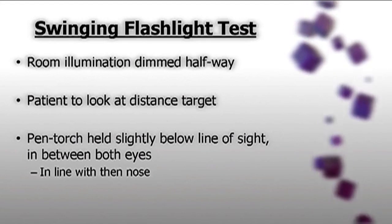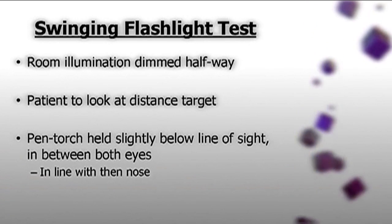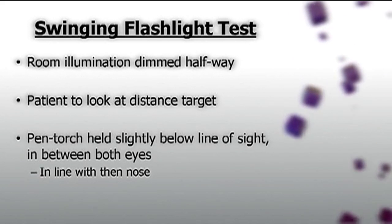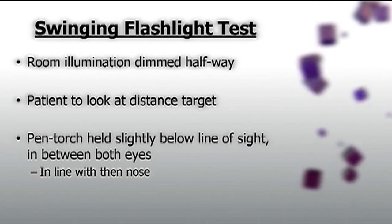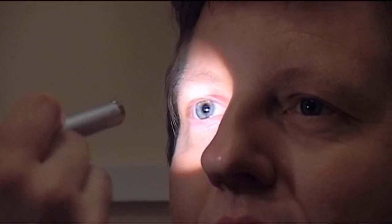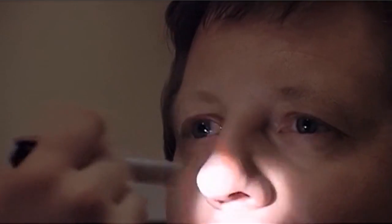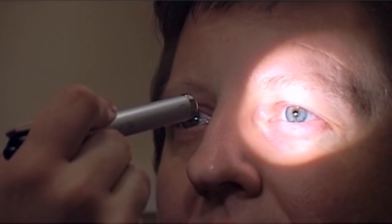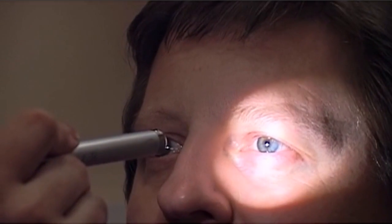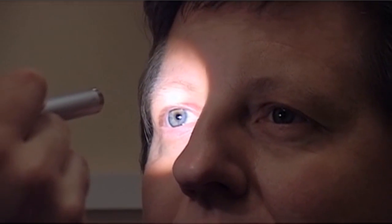Next, we would look for a relative afferent pupil defect using the swinging flashlight test. When doing the swinging flashlight test, you want the room illumination slightly dimmed again, and you want your patient to be looking in the distance. The pen torch is usually placed in line with the nose, so that you will be stimulating a similar extent to the retina in each eye. The pen torch will be directed towards one of the eyes and held there for two to three seconds — you should get an associated meiosis from both eyes. Following this, you will flick the pen torch very quickly so it is shining in the opposite eye, and again, both pupils should remain constricted.